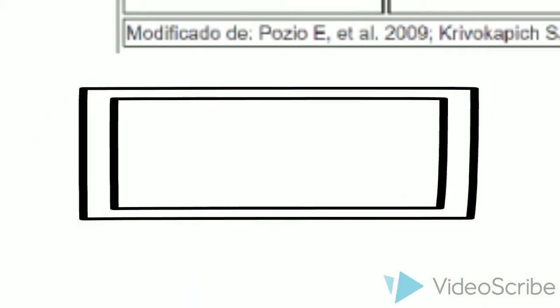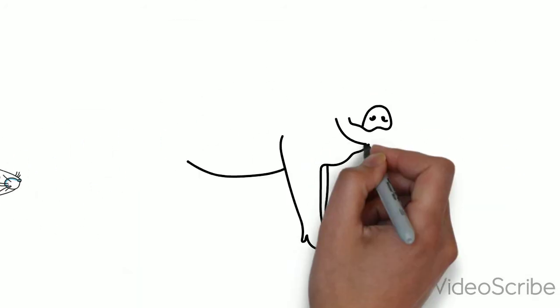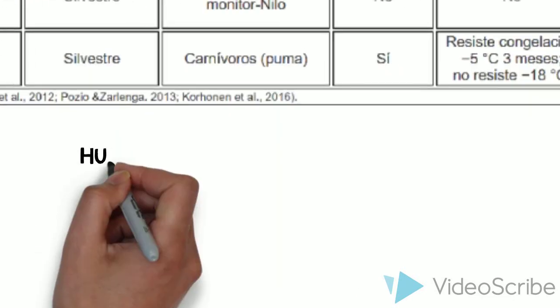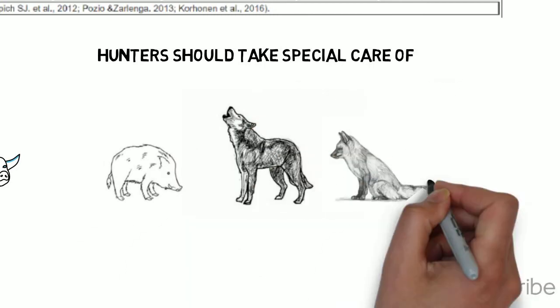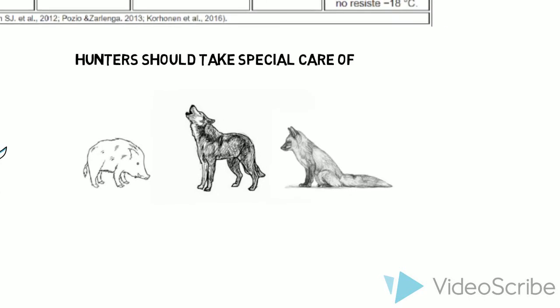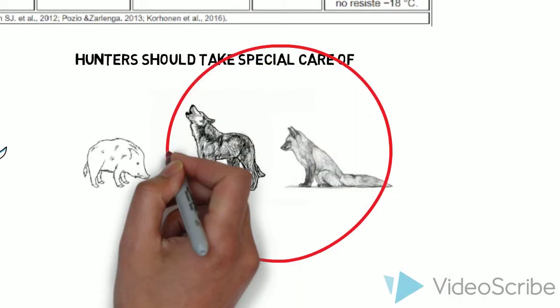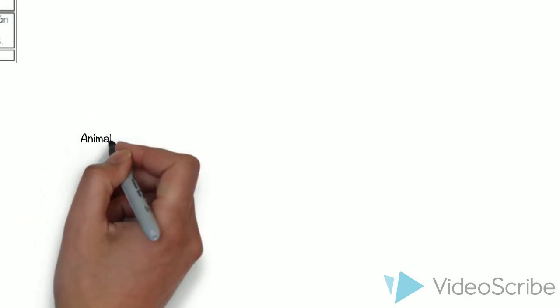This infection is more common than we think, mainly due to the great amount of different reservoirs that can get it. Some examples could be the rat or the pig, but hunters should take special care of wild boars, wolves or foxes. Now, we know that these two last ones are not usually eaten by us, but we must remember that, for example, if we don't wash our hands and afterwards we bite our nails or lick our fingers, we can also be exposed to them.